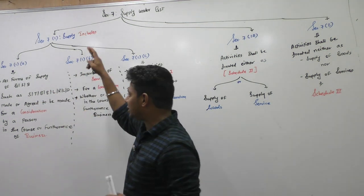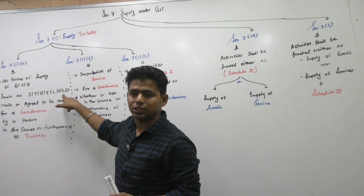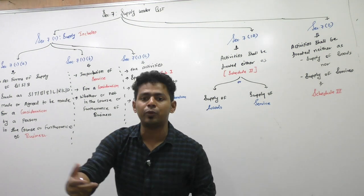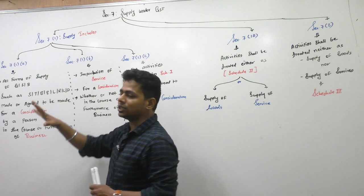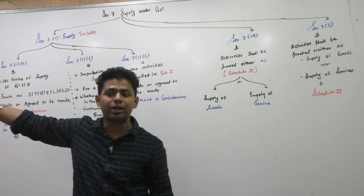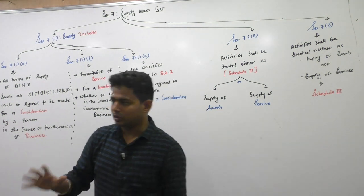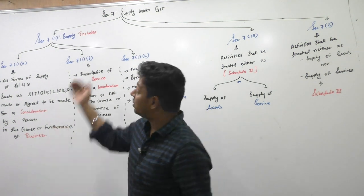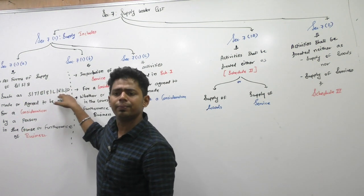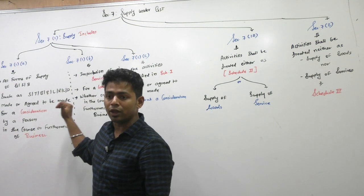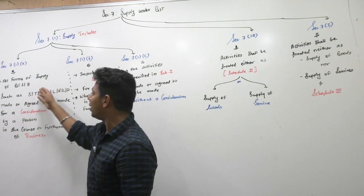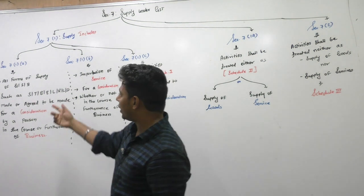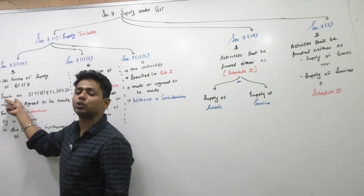So: sale, transfer, barter, exchange, lease, rental, license. Certain goods are given on a license basis — intellectual property rights are usually given on license basis, software is given on license basis. License or disposal — disposal means even if I take it and sell it to a scrap dealer, or I dispose it off entirely, that is also supply. And since the definition says 'includes,' something new can also be supply — these are just illustrative words, such as.